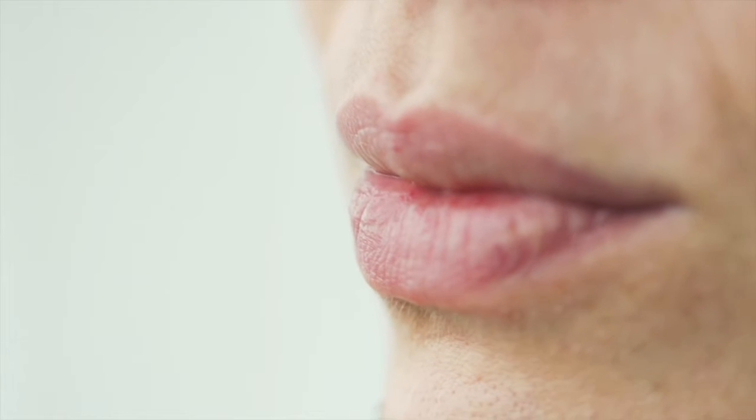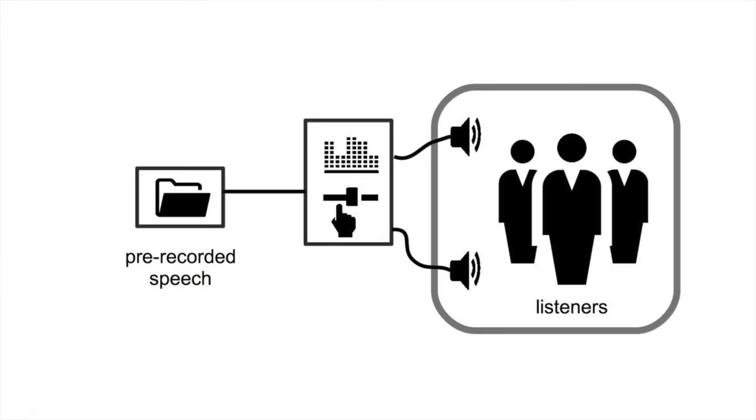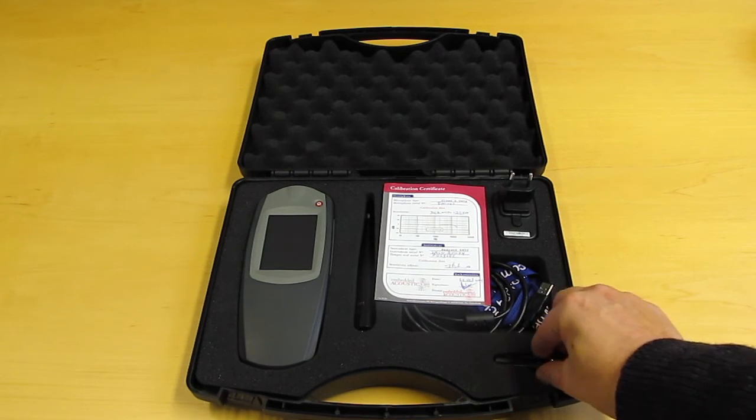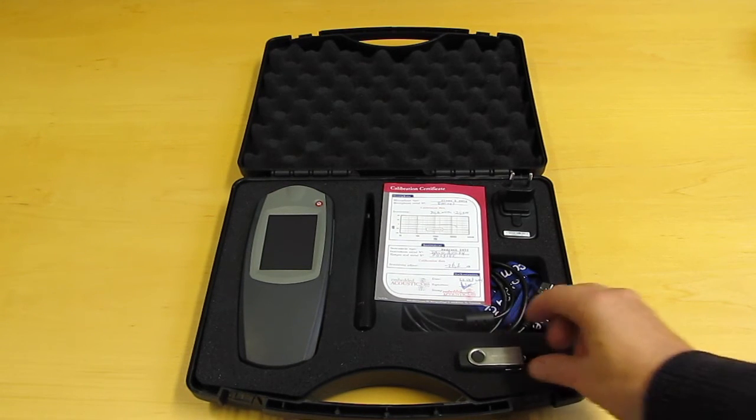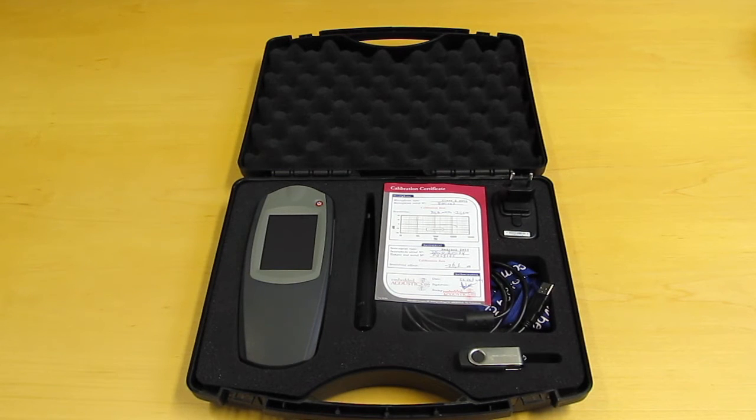What signal source to choose depends on the kind of system you are testing. Some public address systems make use of pre-recorded messages. In those cases, simply upload the STIPER test signal as if it were a new spoken message. The STIPER test signal is provided on a flash drive, bundled with every VOX.